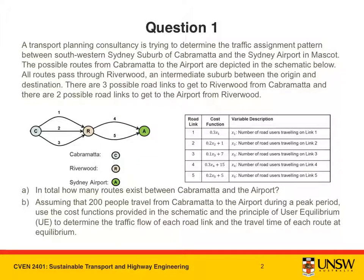A Transport Learning Consultancy is trying to determine the traffic assignment pattern between the south west Sydney suburb of Cabramatta and the Sydney Airport in Mascot. The possible routes from Cabramatta to the airport are depicted in the schematic below. All routes pass through Riverwood, an intermediate suburb between the origin and destination. There are three possible road links to get to Riverwood from Cabramatta and two possible road links to get to the airport from Riverwood.